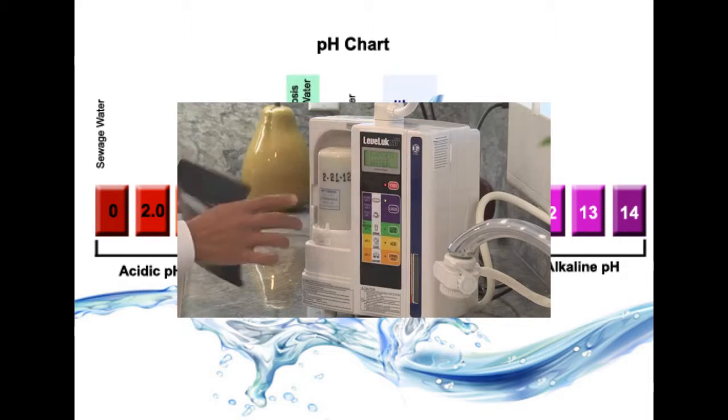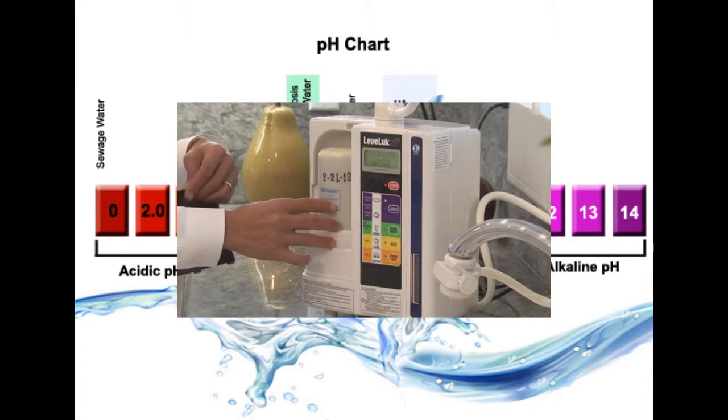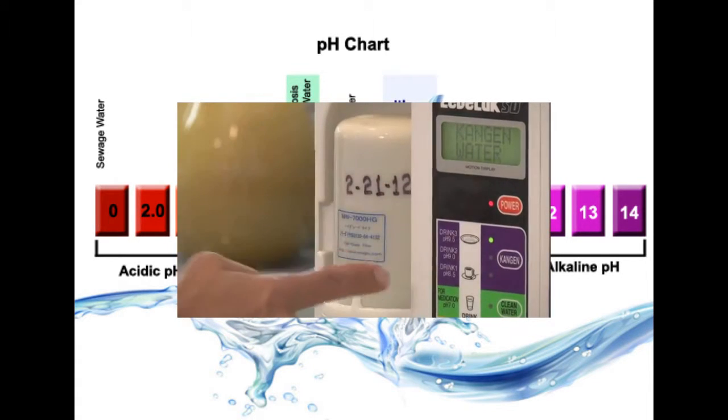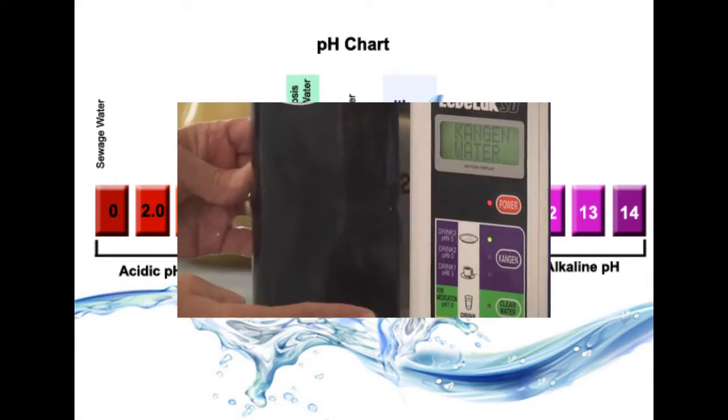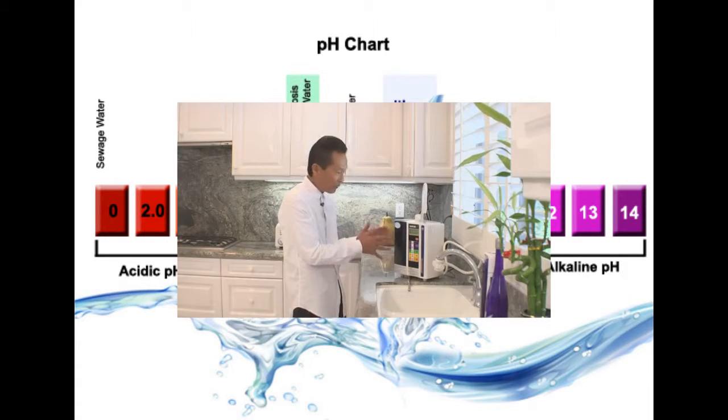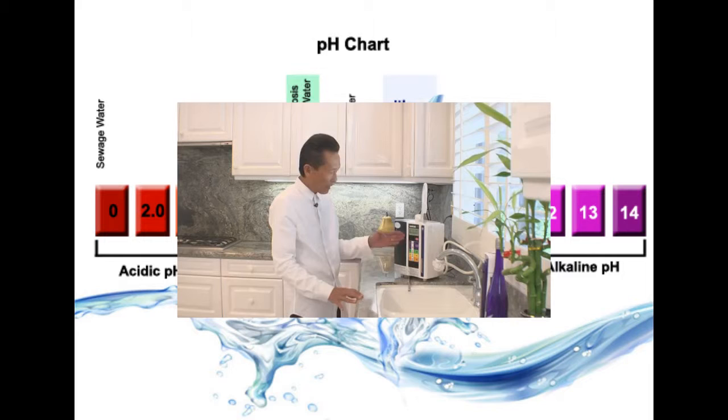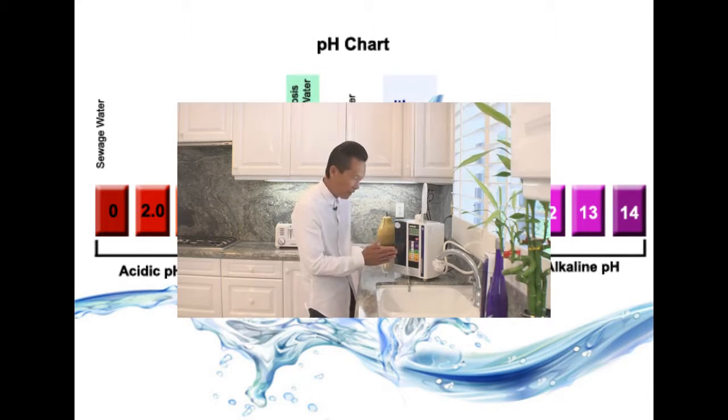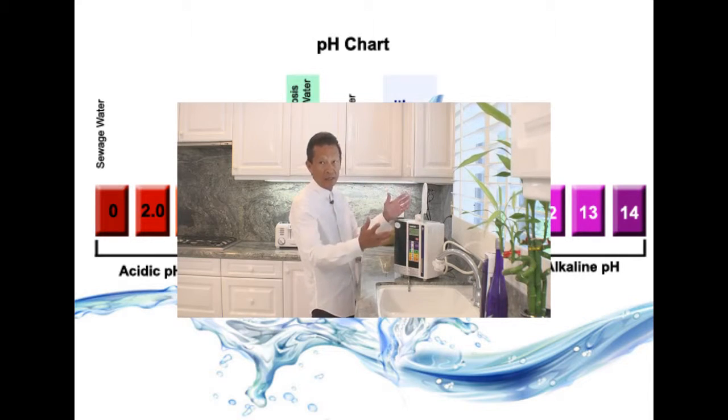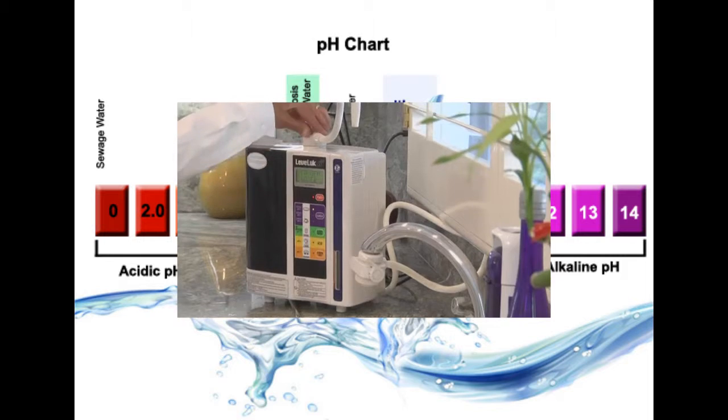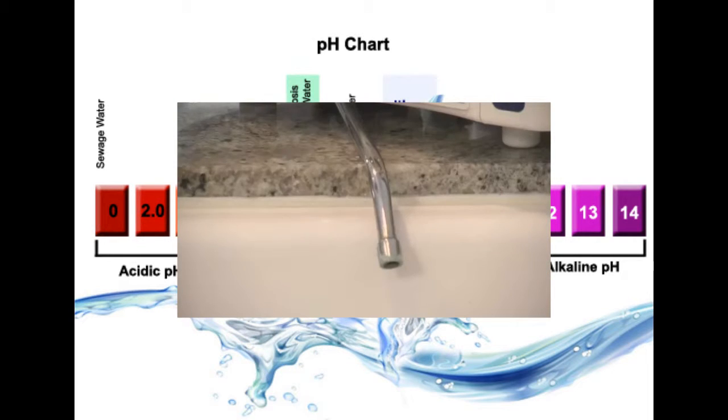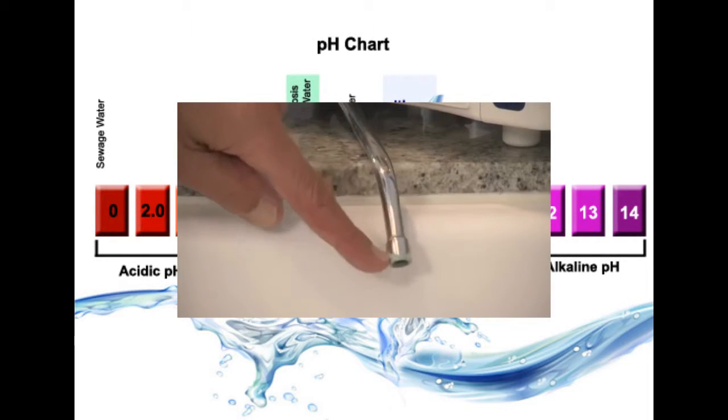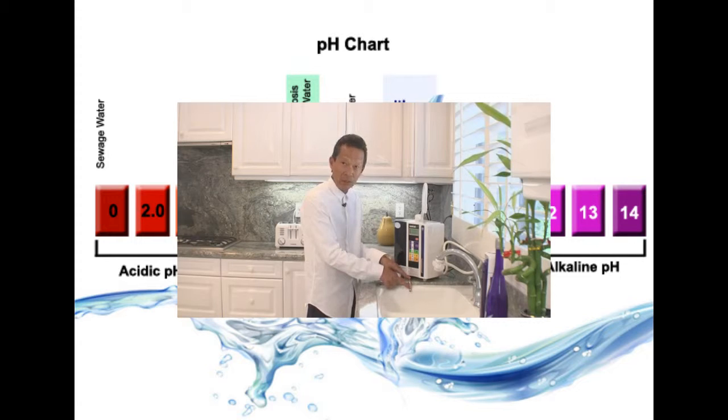The first thing it does is it goes through a double carbon antibacterial filter here. It's going to sterilize the water, clean the water. After that the water is going to go through seven platinum coated titanium plates. What it's doing is it's going to charge the water and split the water. The good water is going to come out up here and the bad water is going to be discarded to this bottom hose over here.